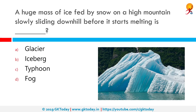A huge mass of ice fed by snow on a high mountain, slowly sliding downhill before it starts melting, is what? The correct answer is a glacier. A glacier is a large perennial accumulation of crystalline ice — perennial meaning it exists throughout the year. It is made of crystalline ice, snow, rock, sediment, and often liquid water, that originates on land and moves downslope under the influence of its own weight and gravity.